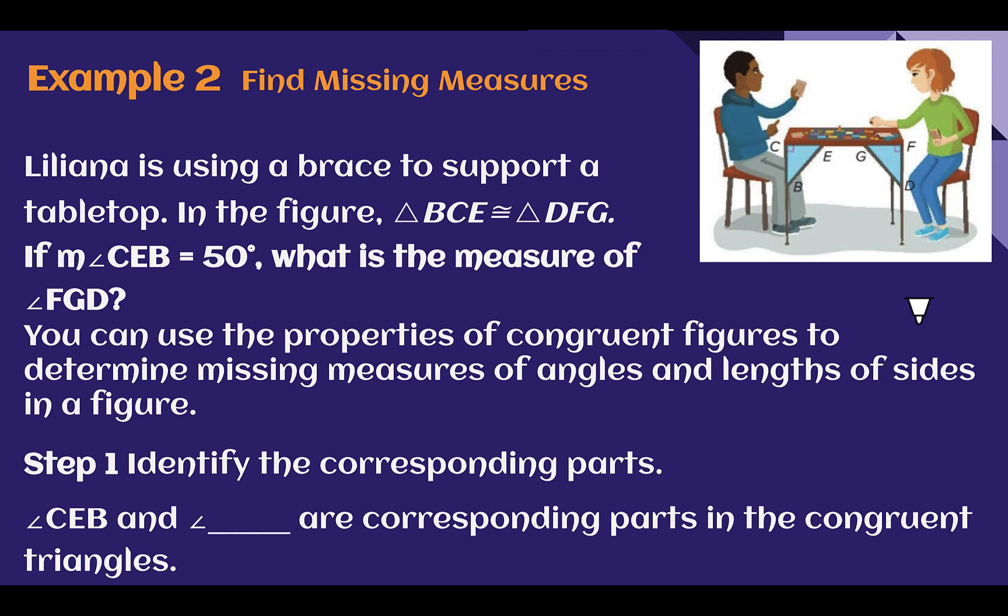Example two, find missing measures. Liliana is using a brace to support a tabletop. In the figure, triangle BCE is congruent to triangle DFG. If the measure of angle CEB is 50 degrees, what is the measure of angle FGD?